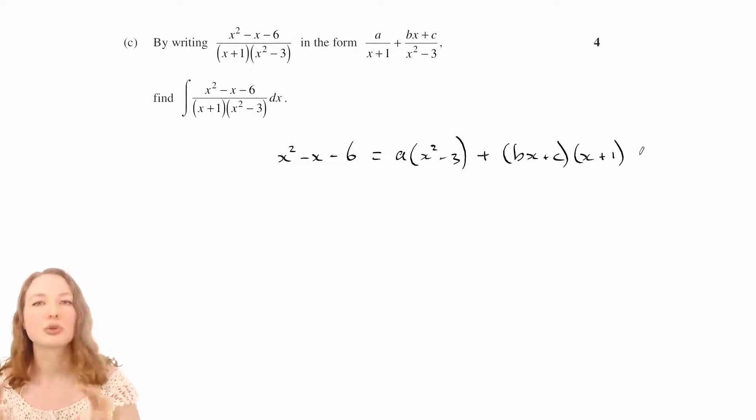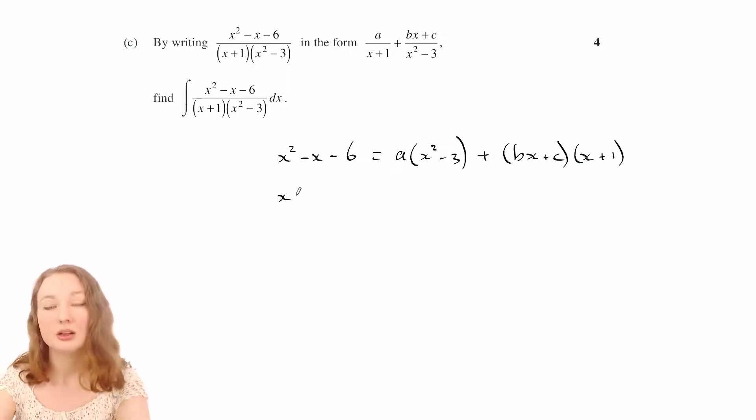Now what I might do here is use a combination of two methods. One is where you try different values of x to solve it, and the other one is where you collect all the coefficients of x squared and so on. I might actually use a combination of those two, because what I want to do is set x to be negative 1 to get rid of that bit.